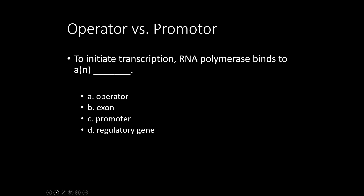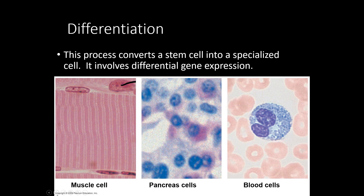All of the cells in your body have the same 46 chromosomes, yet they look very different — skeletal muscle cells, pancreatic alpha and beta cells, red and white blood cells like this neutrophil. All these cells have the same genetic information, yet look how different they appear under a microscope. All of these cells came from stem cells during embryonic development. A stem cell can be anything it wants to be when it grows up — it can become a muscle cell or a neutrophil — but a neutrophil can't naturally back up and become a stem cell again. Differentiation is a forward process and we can't go backwards under natural conditions. Differentiation is the process that converts a stem cell into a specific kind of cell like a muscle cell.